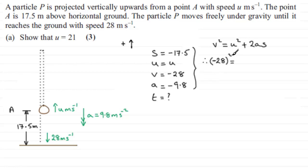So you got minus 28 all squared equals u squared, which we're trying to find, plus two times the acceleration, which is minus 9.8, times s the displacement, which is minus 17.5.